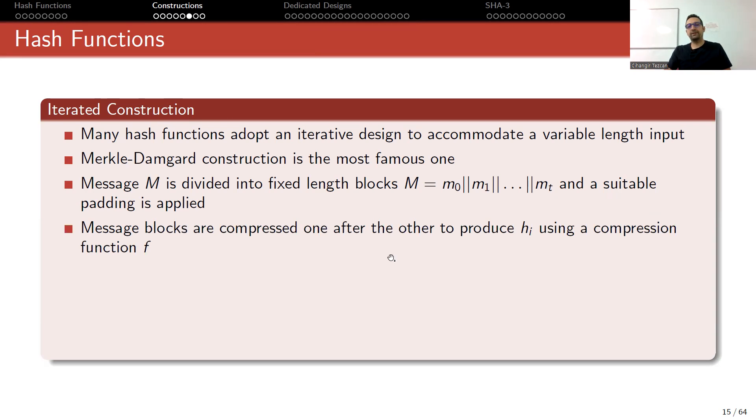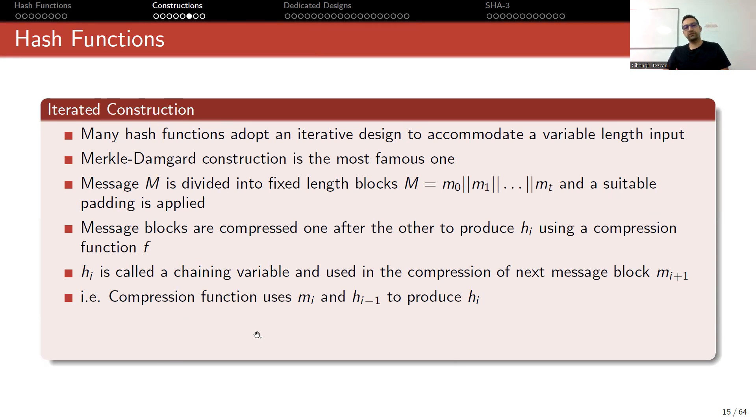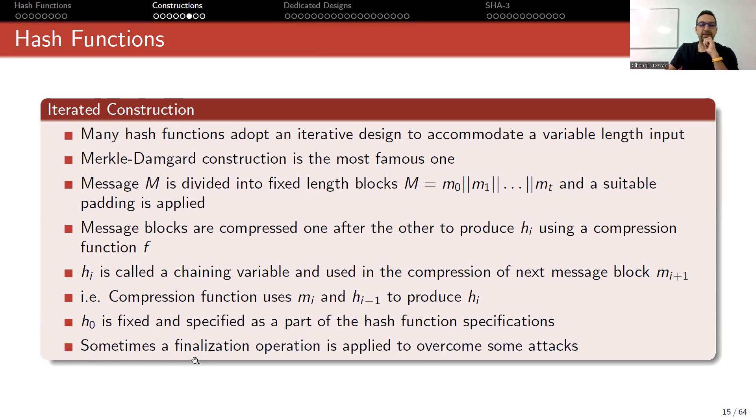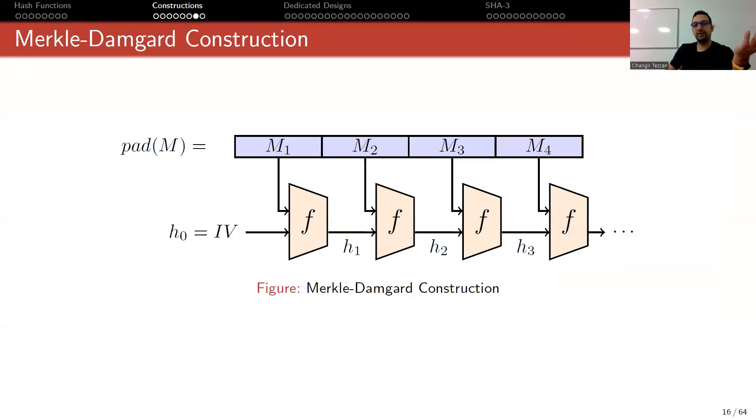Message blocks are compressed one after the other to produce h_i using compression function f. h_i is called the chaining variable and uses the compression of next message block m_{i+1}. The compression function uses m_i and h_{i-1} to produce h_i. h_0 is fixed and specified as a part of the hash function specifications; generally it is an IV put in the standardization documents. Sometimes a finalization operation is applied to overcome some attacks. I explained this, but it is not easy to understand, so it will be very clear when we look at this picture.